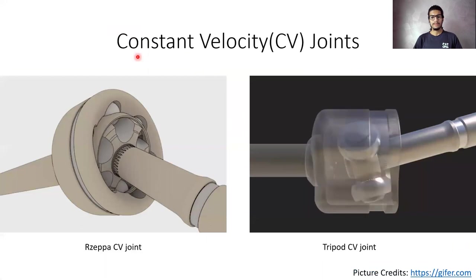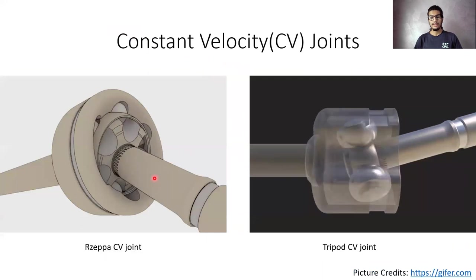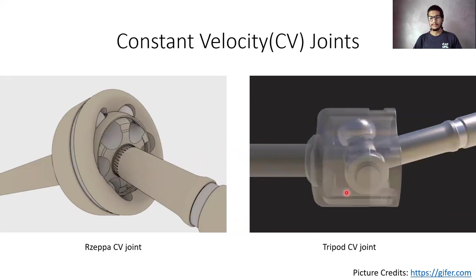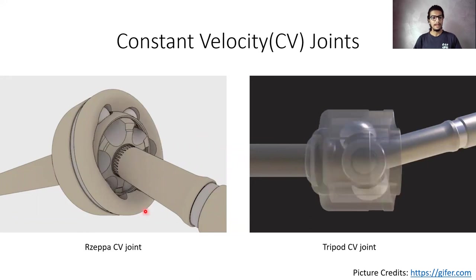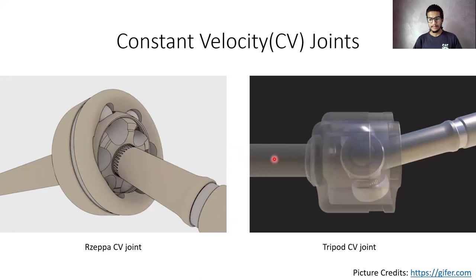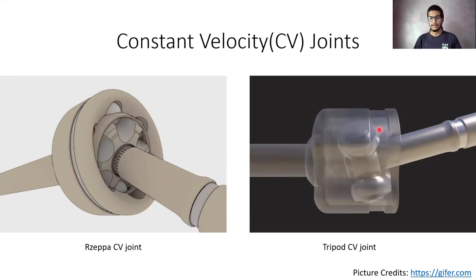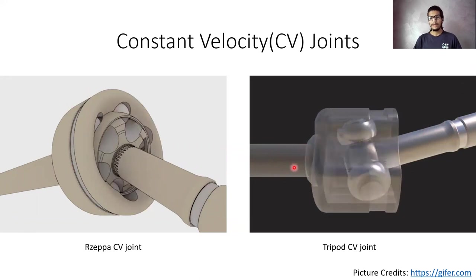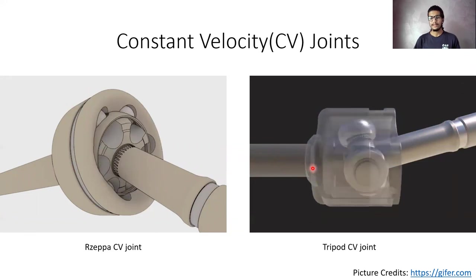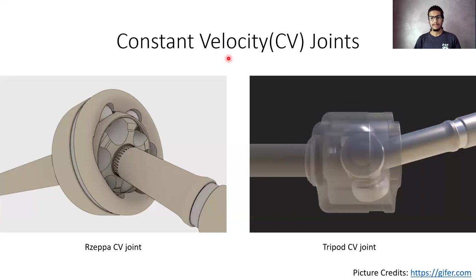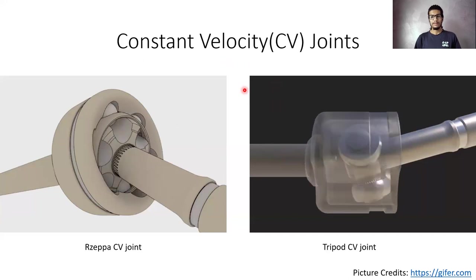Now, coming to the next section, that is the constant velocity joint, or CV joint. These joints are very crucial for a drivetrain because they set the input and output shaft at different angles. As you can see, on the right hand side there is tripod CV joint and on the left hand side we have Rzeppa CV joint. Considering this as an input shaft and this as the output shaft, we can see some sort of an optimal angle here rather than a straight 180 degree angle. This helps the power transmission to be transmitted at a different angle as per the requirement. And as the name suggests, it maintains the constant velocity in both the shafts.